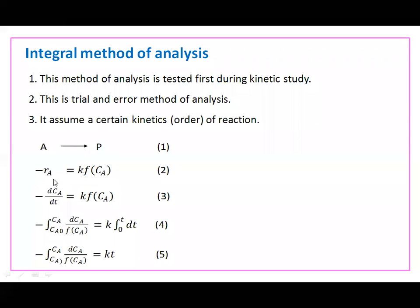After that, we are aware that minus R_A can be written as minus dC_A/dt = K·f(C_A). Then the similar terms are separated, so you can write: minus dC_A / f(C_A) = K·dt.